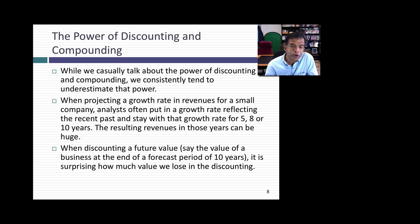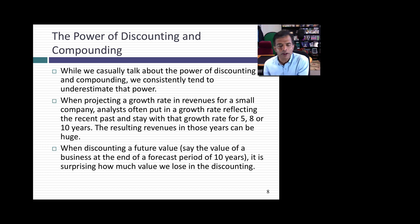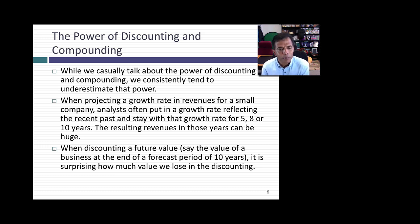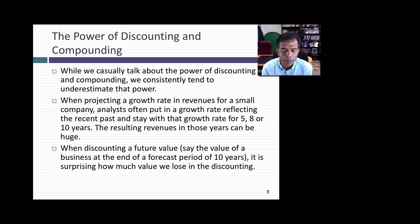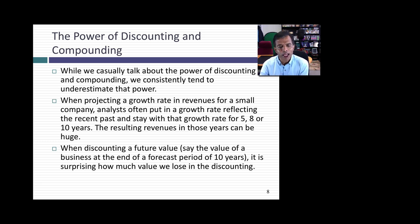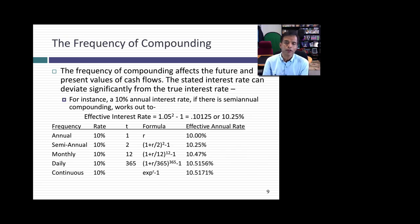When you're projecting a value ten years out — which is often what you do in valuation when you estimate the value of a company ten years out and bring it back to today — don't be surprised to see a big loss in value. A $100 billion terminal value at the end of ten years today might be worth only $35 billion. Working with the numbers will give you a better sense of the effect of compounding and discounting.